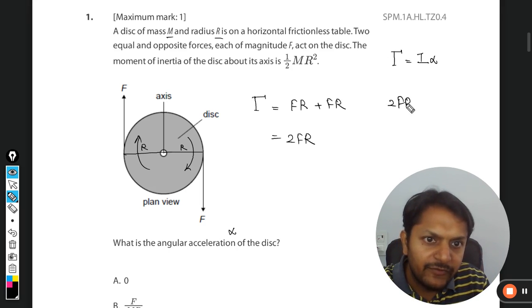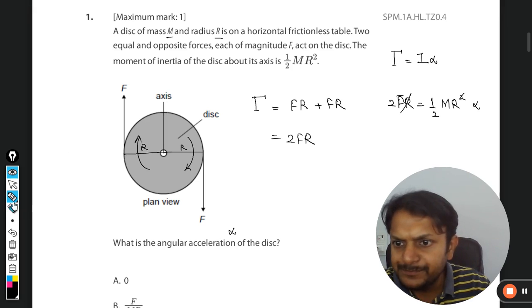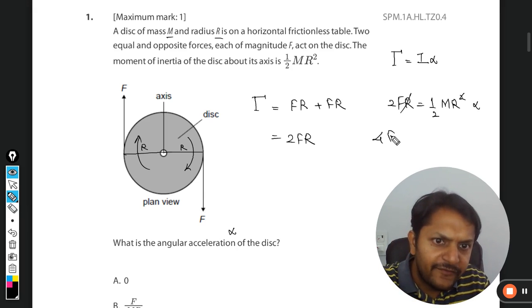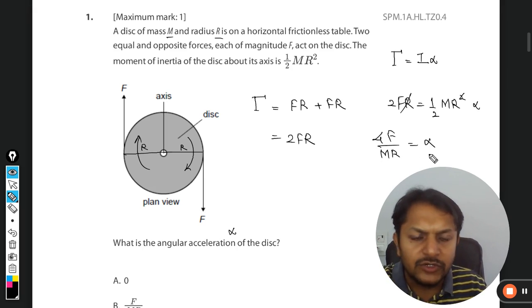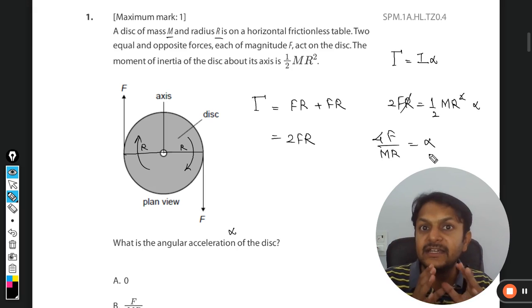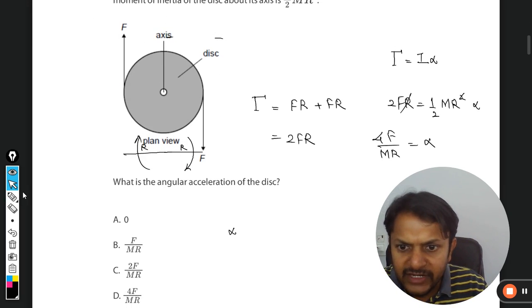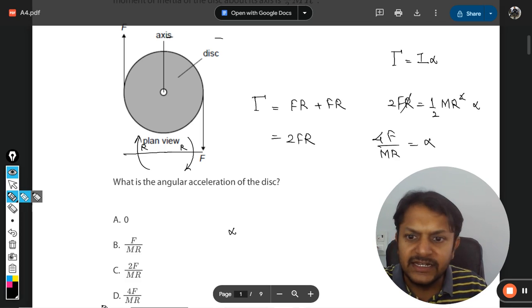Now we just plug our values here. The moment of inertia is given as ½MR², and there is alpha. The R gets cancelled out, so 4F divided by MR will be equal to alpha. This is the correct answer, which is option D. But there is one more thing I want you to note here.